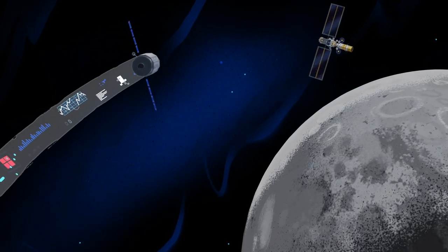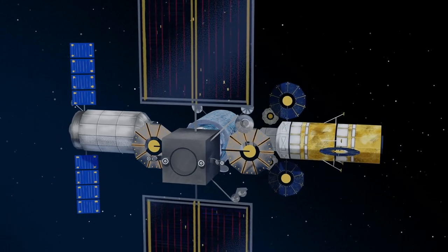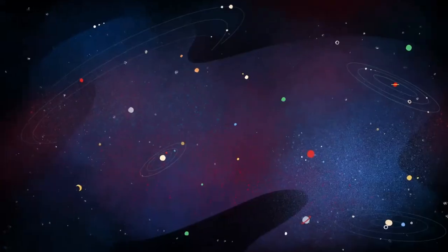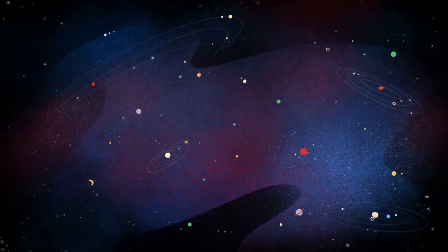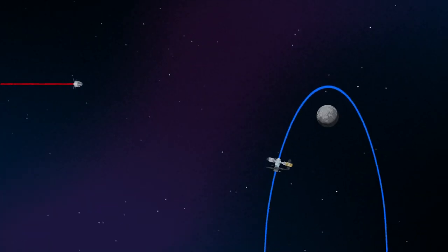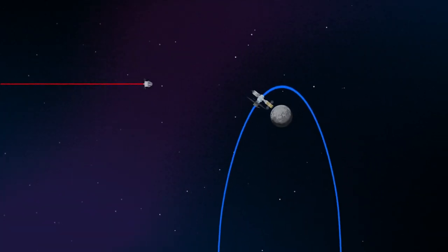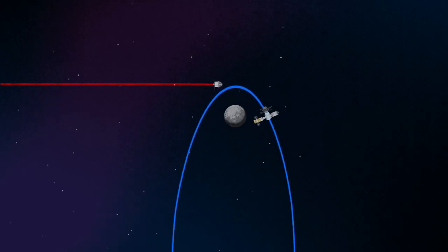And with the growing list of commercial and international opportunities, Gateway is the ideal hub between Earth and all that lies beyond. Returning to our crew as they approach Gateway, the Orion must match the elliptical orbit of the station in order to successfully dock.